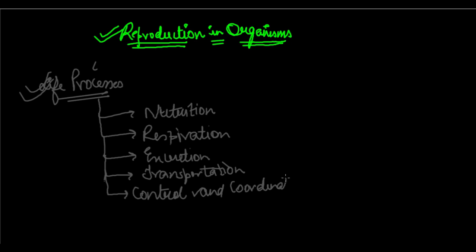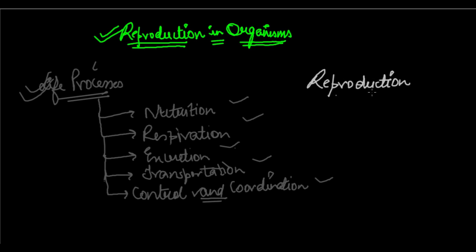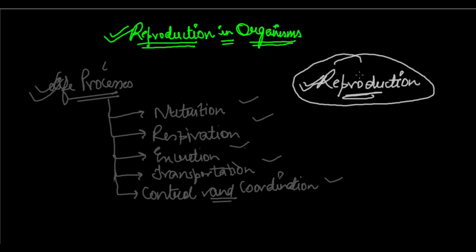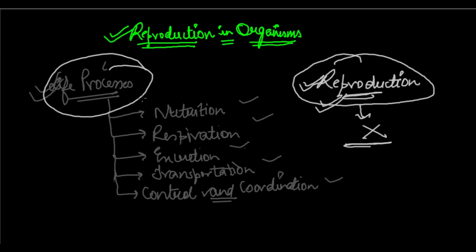We looked at what these topics were, their meaning, and why they were important. When I was teaching that chapter, I mentioned something really important about reproduction — that although reproduction carries great importance, reproduction is also an essential life process. However, reproduction is not actually a life process. It is an essential biological process, not a life process.